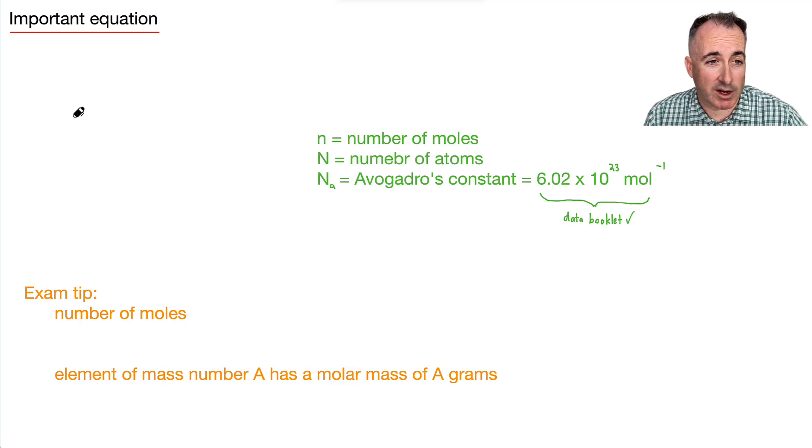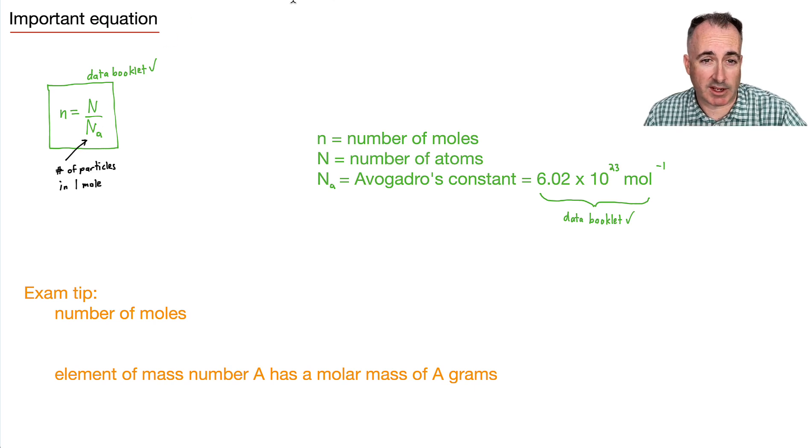So now we're ready for an important equation. It's from your data booklet. It goes like this: n equals N over NA. Lowercase n equals capital N over NA. So what's the meaning of this? Well, first of all, I think it's important to know what NA is here. This is the number of particles in one mole.